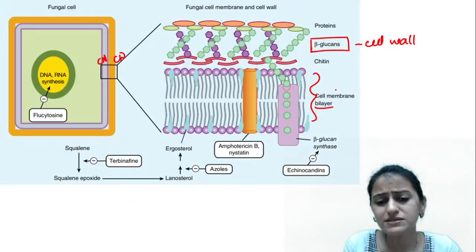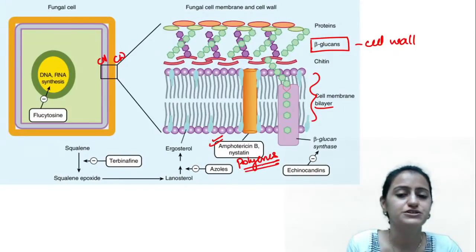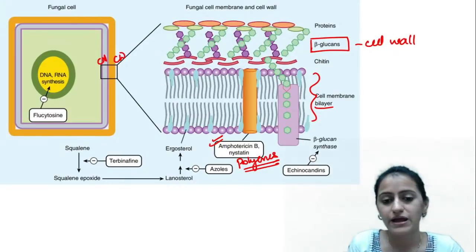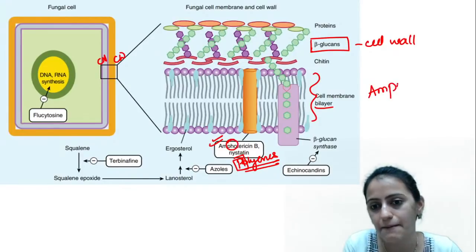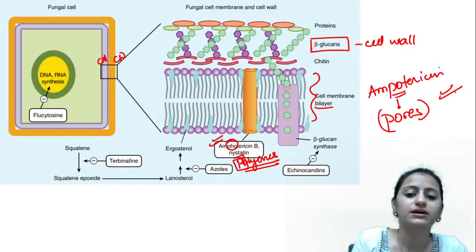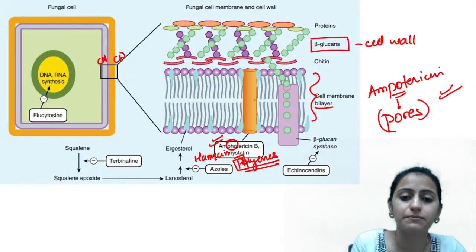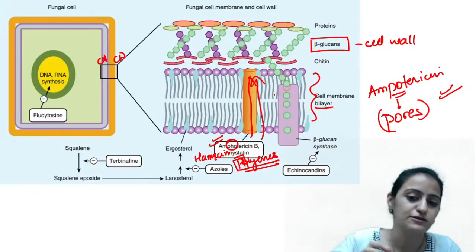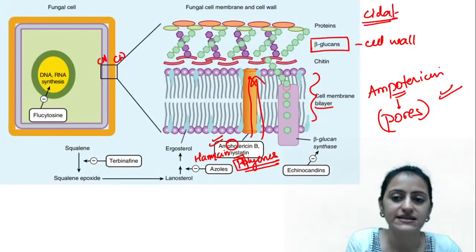Amphotericin B and nystatin come under the polyenes group. As the term suggests — polyenes — amphotericin forms pores. Which drugs act by forming pores? Amphotericin B, nystatin, and natamycin. They form pores in the cell membrane, causing all potassium and intracellular constituents to leak out, killing the fungus. Polyenes are fungicidal drugs.